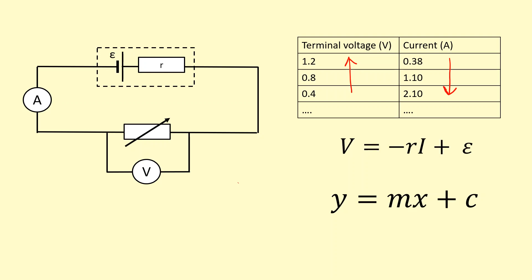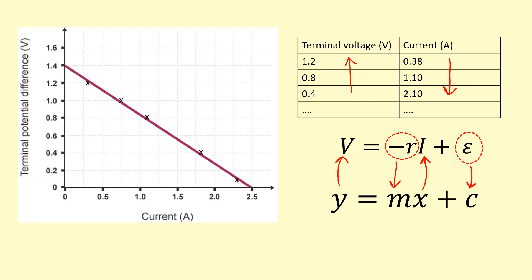If I plot terminal voltage V on the y-axis and current on the x-axis, let's identify what m and c are. The thing that multiplies the current is the negative of the internal resistance, so our gradient is going to be the negative of the internal resistance. The intercept — the thing being added — is the EMF. So from this graph of terminal voltage against current, the y-intercept is going to be the EMF.